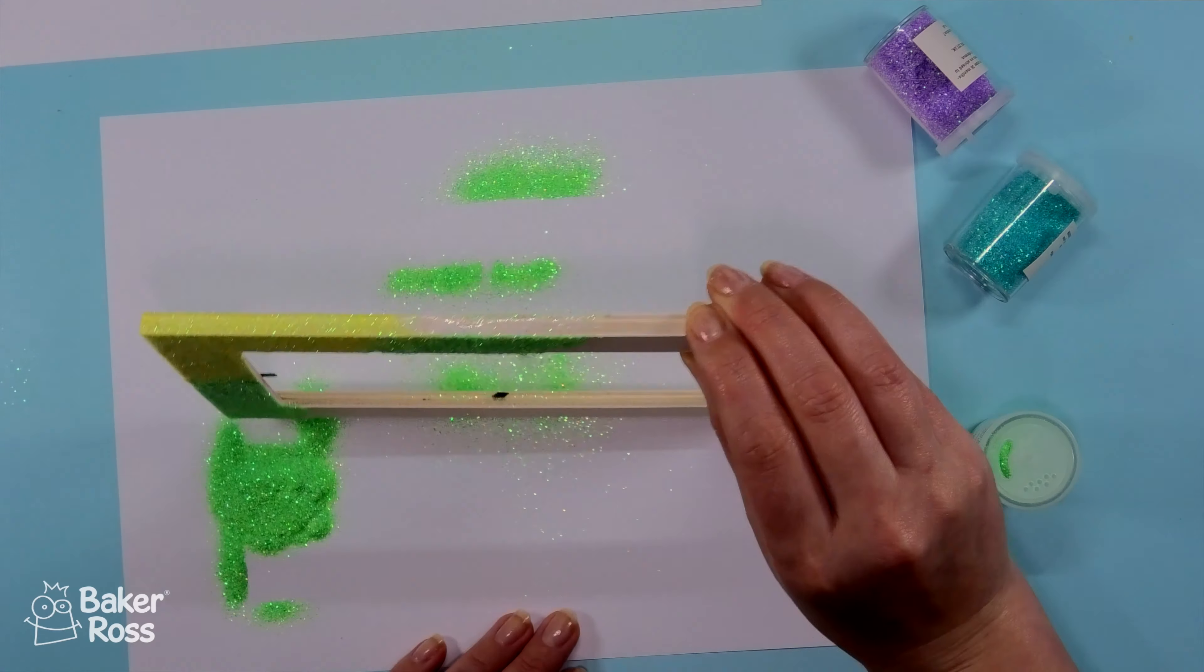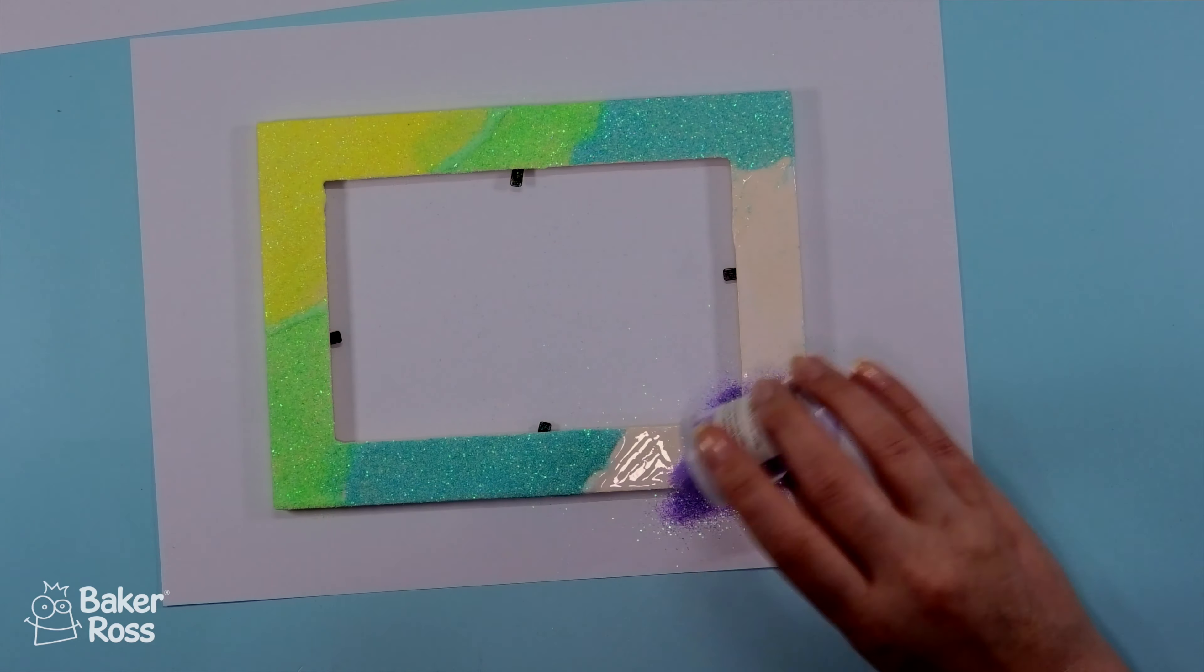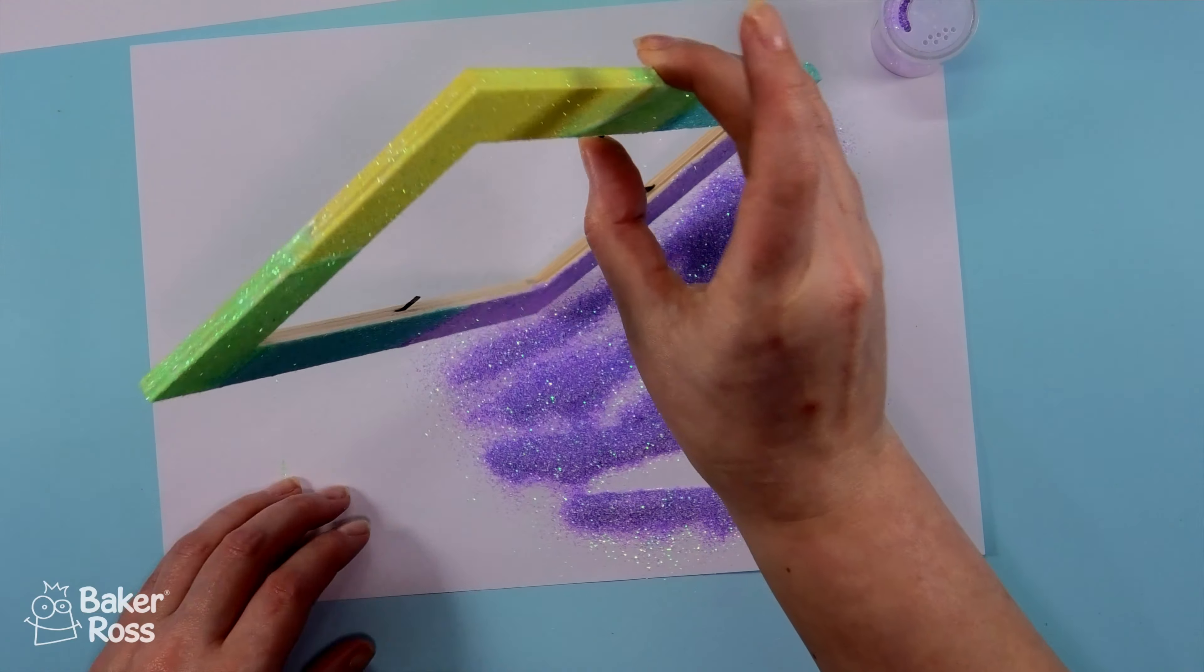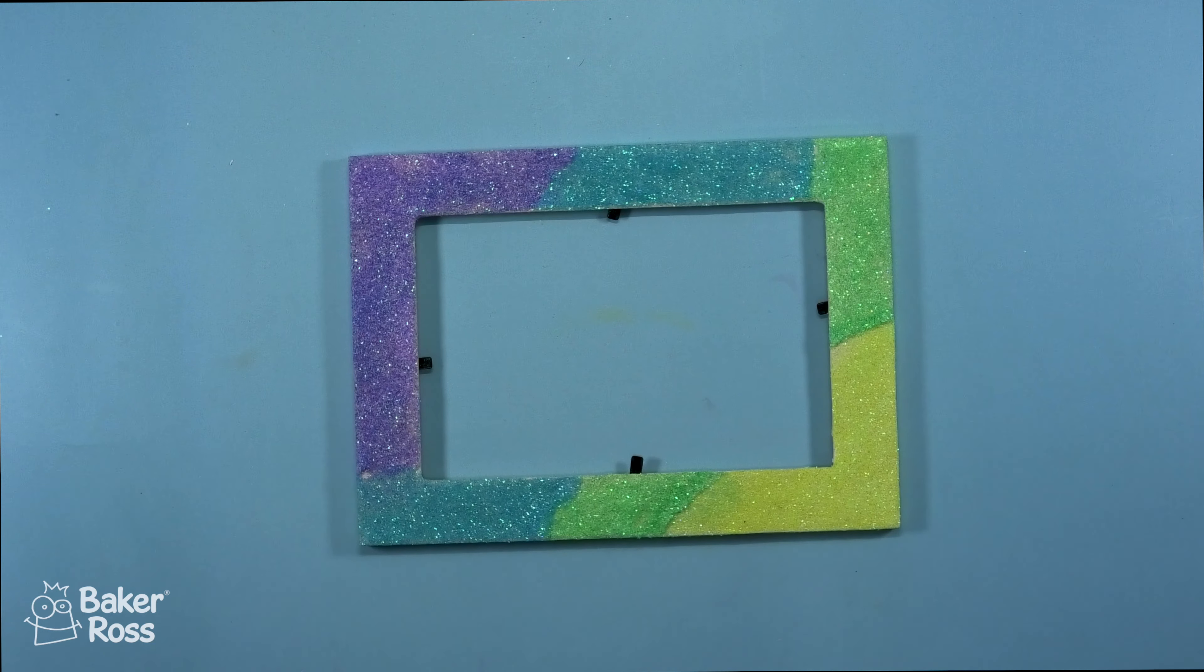Now I do have this sped up but you can see that I'm just working through each of the colors that I'm using. I decided to use a yellow, a green, a blue and a purple for this frame. You'll notice from the picture at the start of the video I also made a pink and purple version.